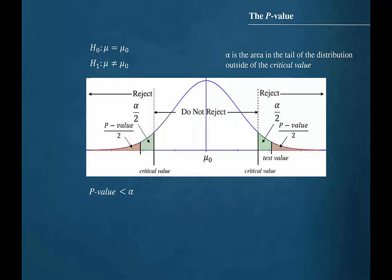We can also use the p-value to make decisions in two-tailed tests. In this particular instance of a two-tailed test, the test value has landed in the rejection region. The p-value is the sum of the two symmetric areas under the curve shaded in red. In a two-tailed test, alpha is split into the two tails and is therefore the sum of the two symmetric areas shaded in green. The graph shows the sum of the two areas shaded in red is smaller than the sum of the two areas shaded in green, so the p-value is less than alpha and our decision should be to reject the null hypothesis.